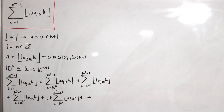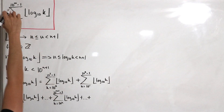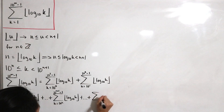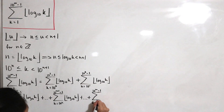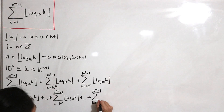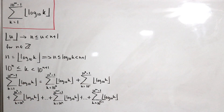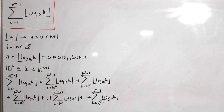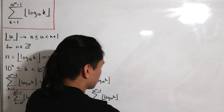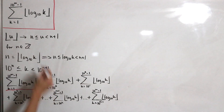Since our upper index is 10^m − 1, and n must be smaller than m, the last sub-sum runs from k = 10^(m−1) up to 10^m − 1. So we've rewritten the original summation as a sum of summations using the floor function definition. This is our new expanded series.